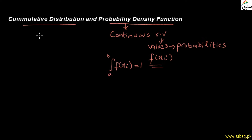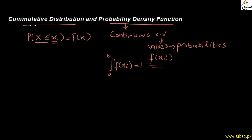For the Cumulative Distribution Function, we know that the probability of the random variable being less than or equal to x gives us the less-than values. The Cumulative Distribution Function is represented as F(x). When we talk about the Cumulative Distribution Function with probability density, we consider the Continuous Random Variable.